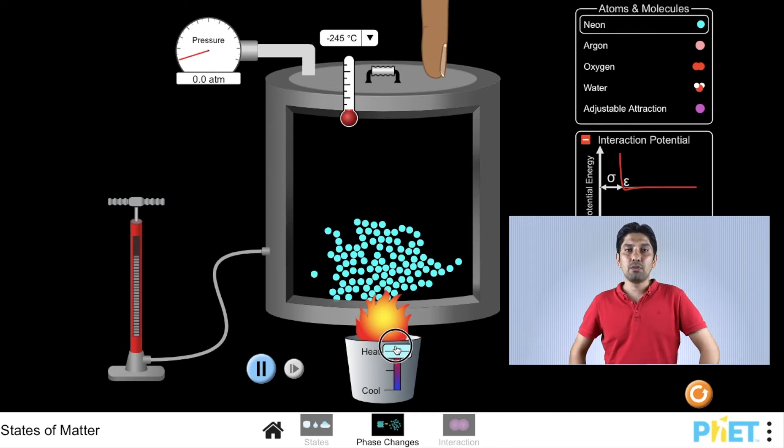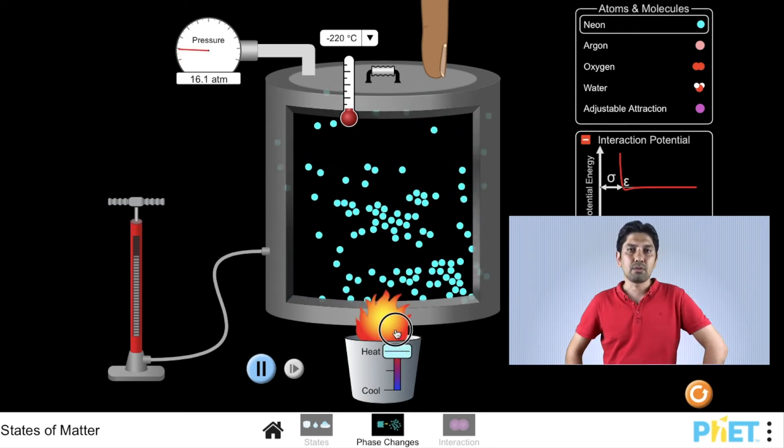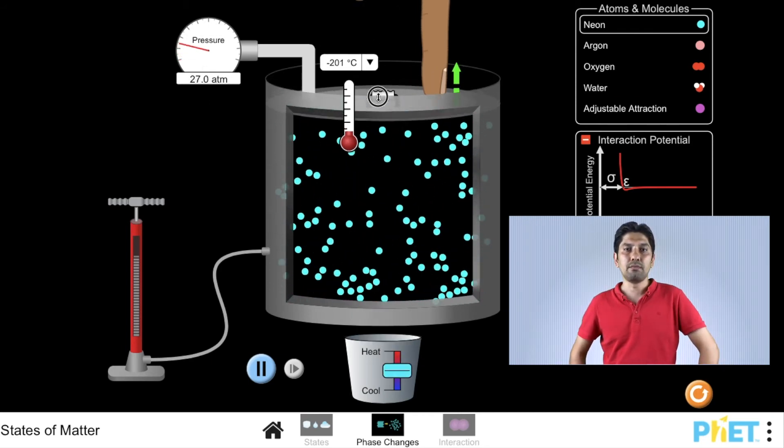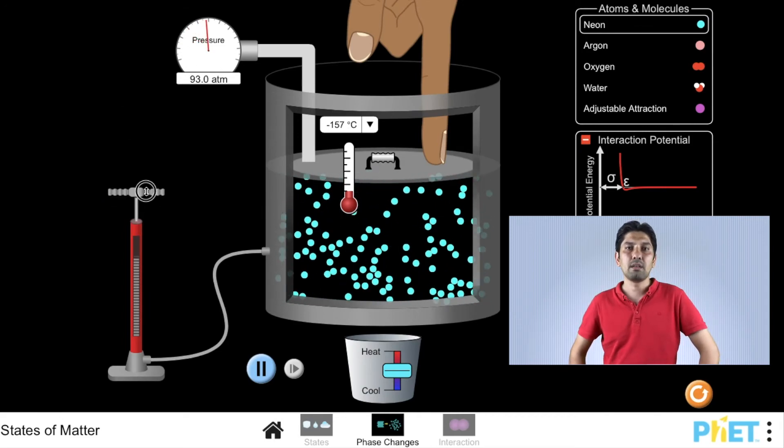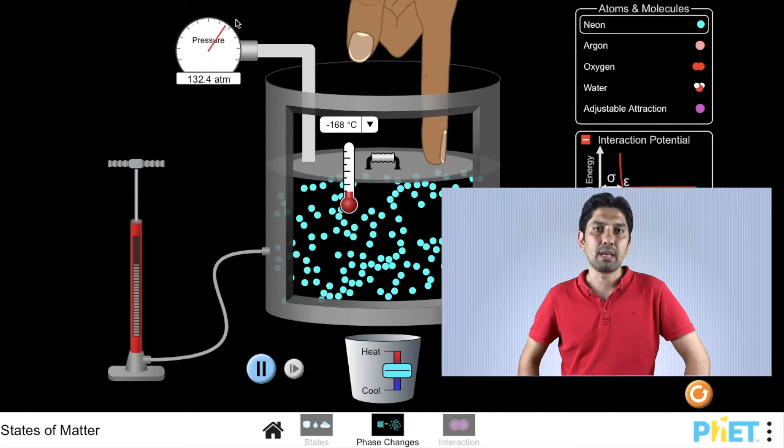When gas applies force per unit area, it's called gas pressure. Gas pressure depends on the volume of the gas, temperature of the gas, and the moles of the gas. Let's explore relationships of force with some other physical quantities.